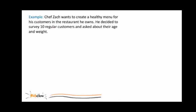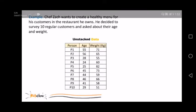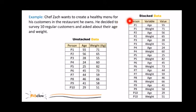For example, Chef Zach wants to create a healthy menu for his customers in the restaurant he owns. He decided to survey 10 regular customers and asked about their age and weight. And this is how it will look like if you use unstacked data. Notice here that the variables are separated with columns, and the values are always beneath these variables.